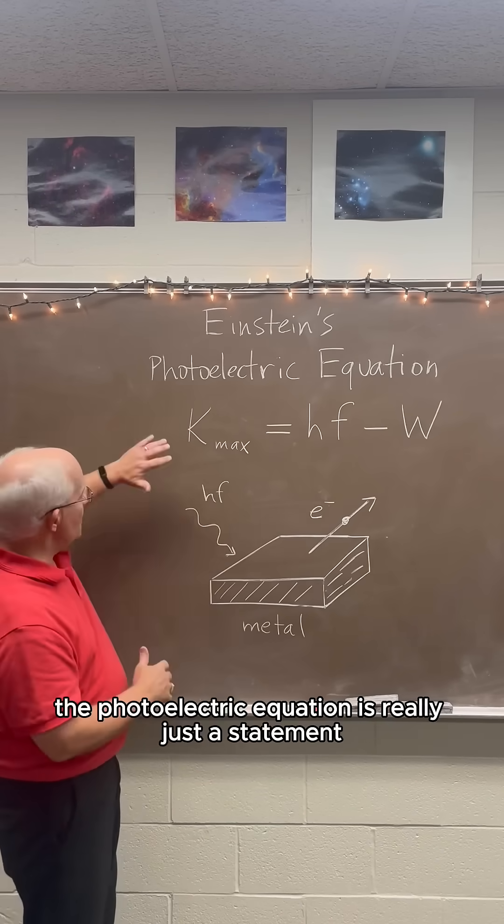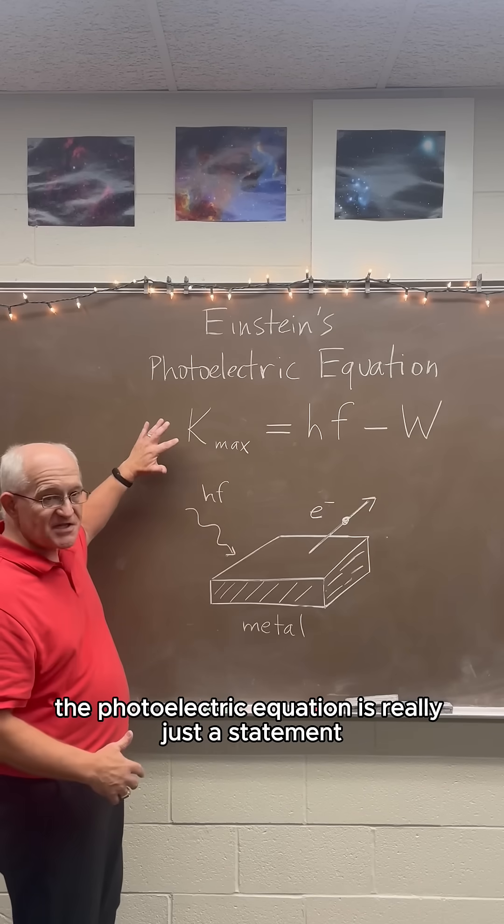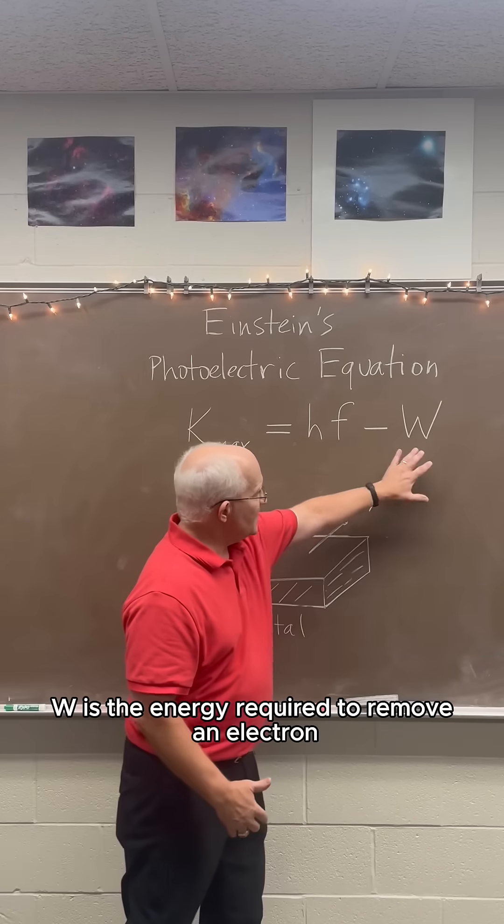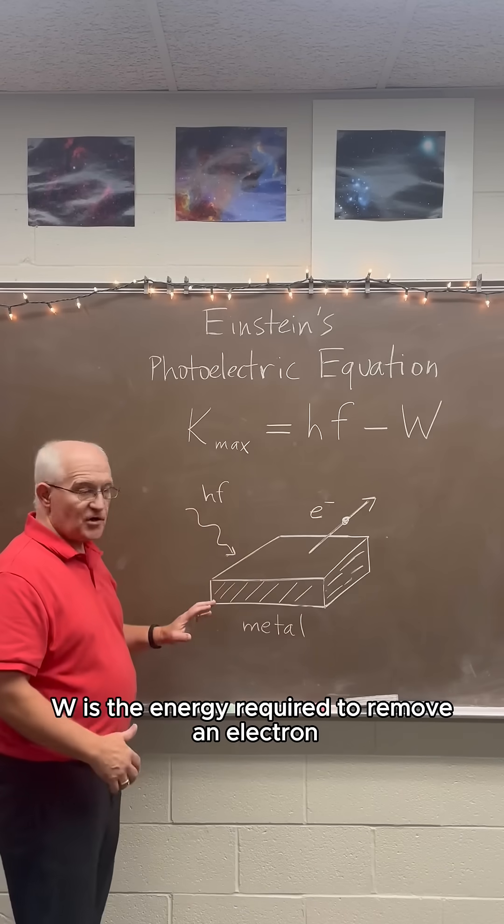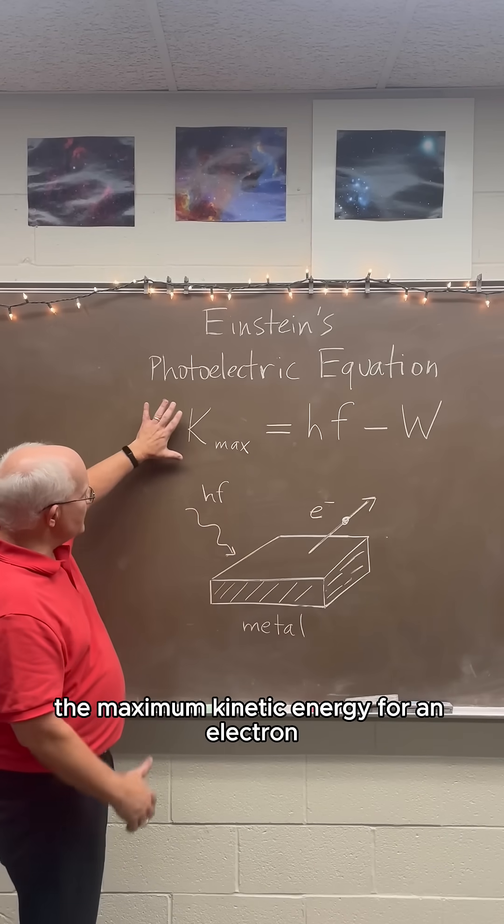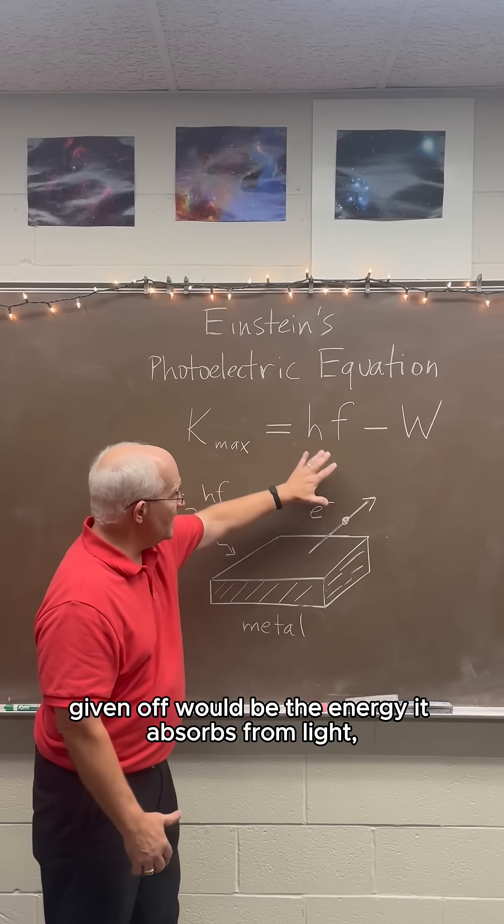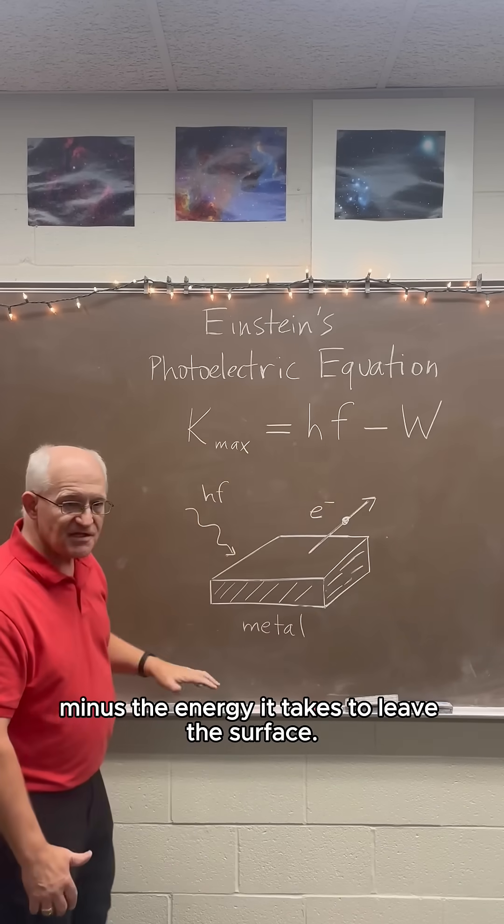So the photoelectric equation is really just a statement of the law of conservation of energy. W is the energy required to remove an electron from the surface. So the maximum kinetic energy for an electron given off would be the energy it absorbs from light minus the energy it takes to leave the surface.